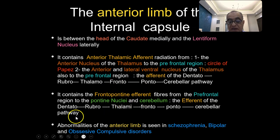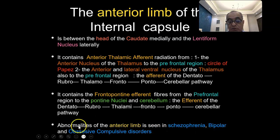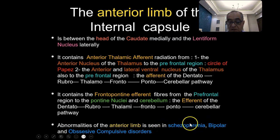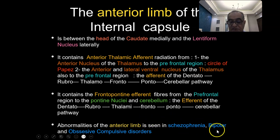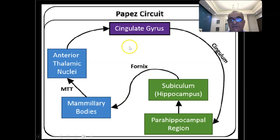So the anterior limb contains the afferents and efferents of the dentato-rubro-thalamo-frontal pontocerebellar pathway. Abnormalities of the anterior limb — seen as atrophic or small — occur in cases of schizophrenia, bipolar disorder, and obsessive-compulsive disorder, because these fibers form part of the psychogenic circuit responsible for emotions.